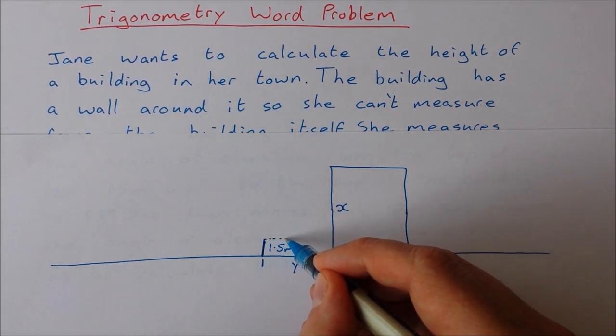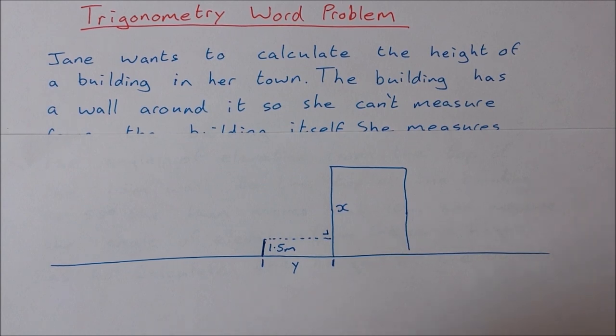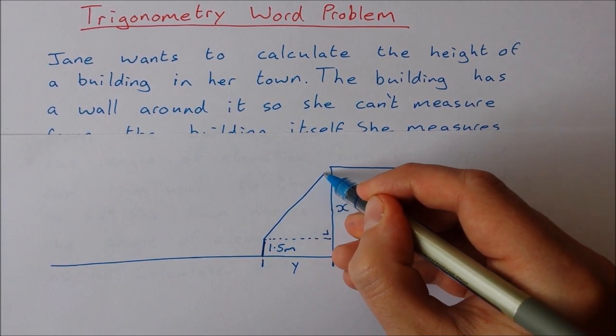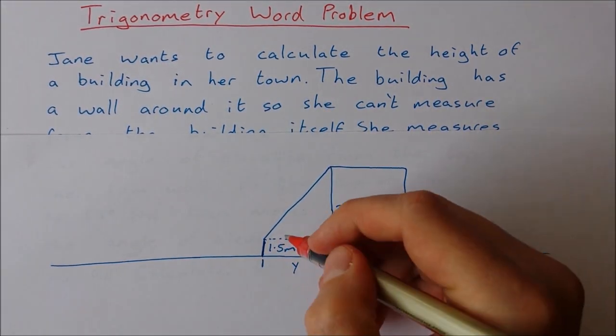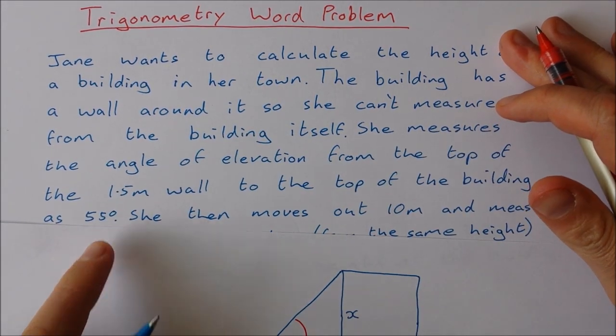I'm going to draw a dotted line here and a right angle. Now I'm going to make a right angle triangle here and Jane has calculated this angle of elevation here as 55 degrees.